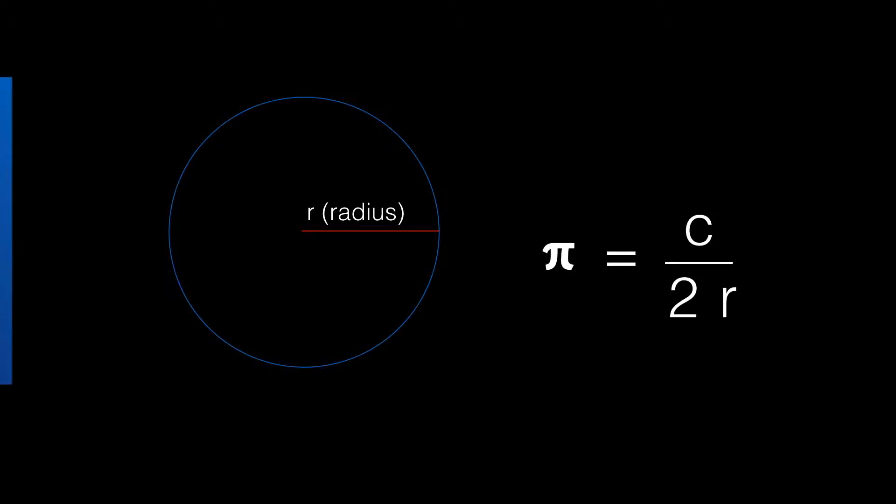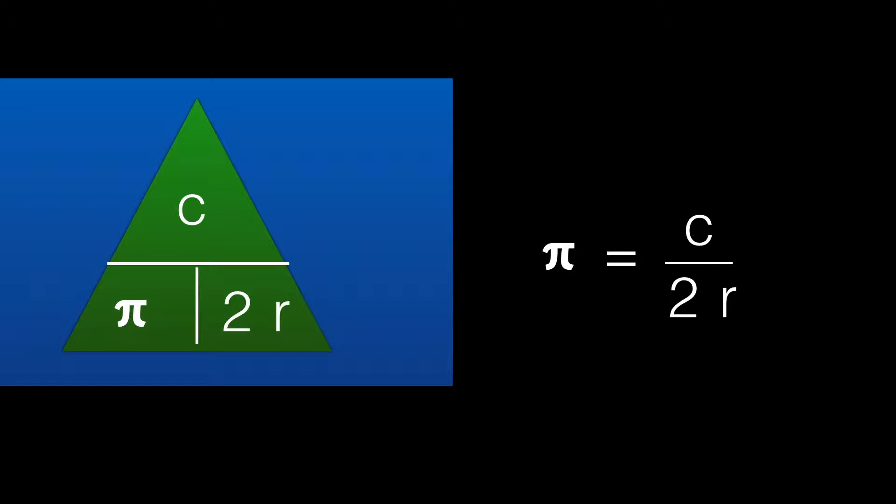We can use the triangle that we encountered at foundation level to transpose the formula. Put C at the top, pi at the left, and 2R bottom right. We can say then that C equals pi times 2R, or more commonly we express this as C equals 2 pi R. You may remember this from school: the circumference of a circle is 2 pi R.